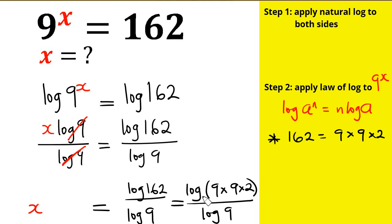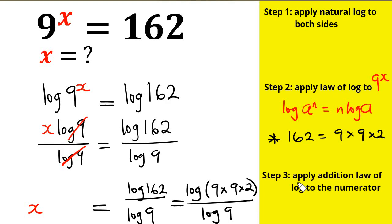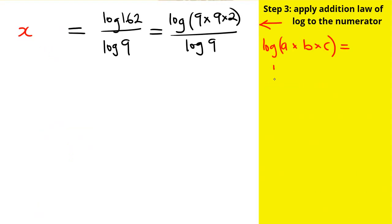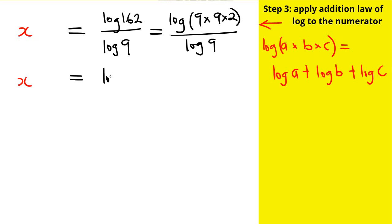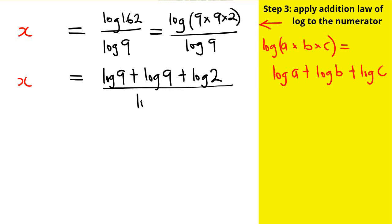Now what I'm going to do to log of (9 × 9 × 2) is apply the log product rule again. That rule says: log of (a × b × c) equals log a plus log b plus log c. Applying this rule to the numerator, we're going to have x equals log 9 plus log 9 plus log 2, all over log 9.